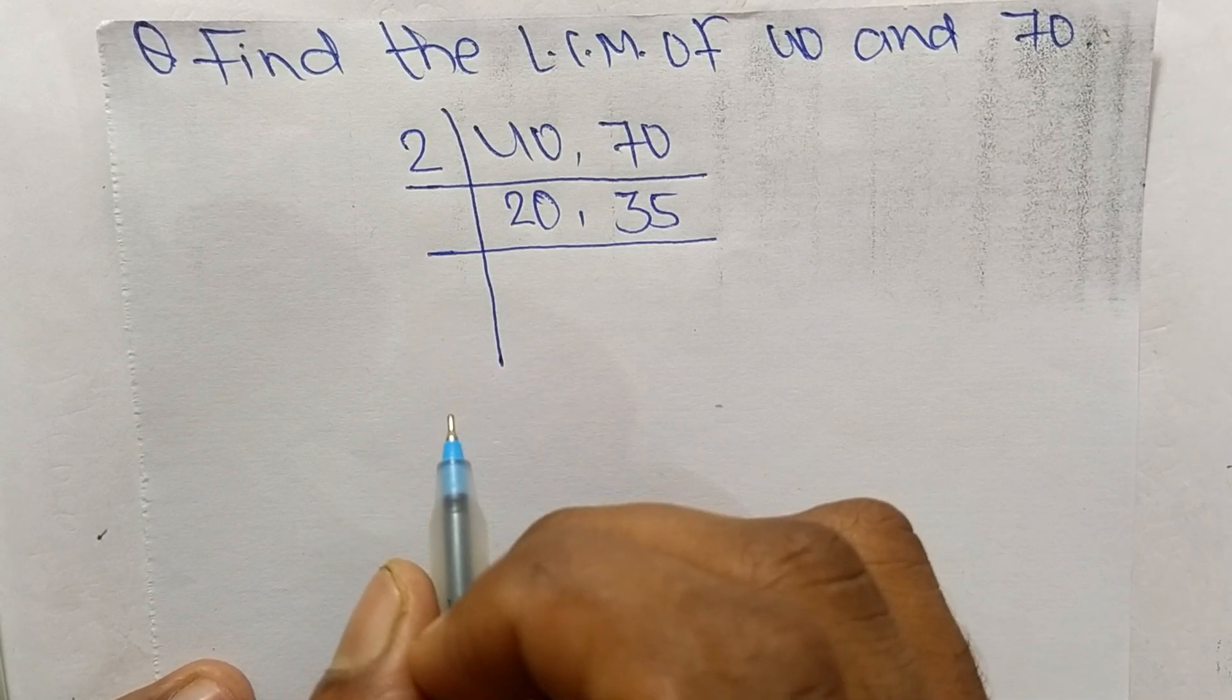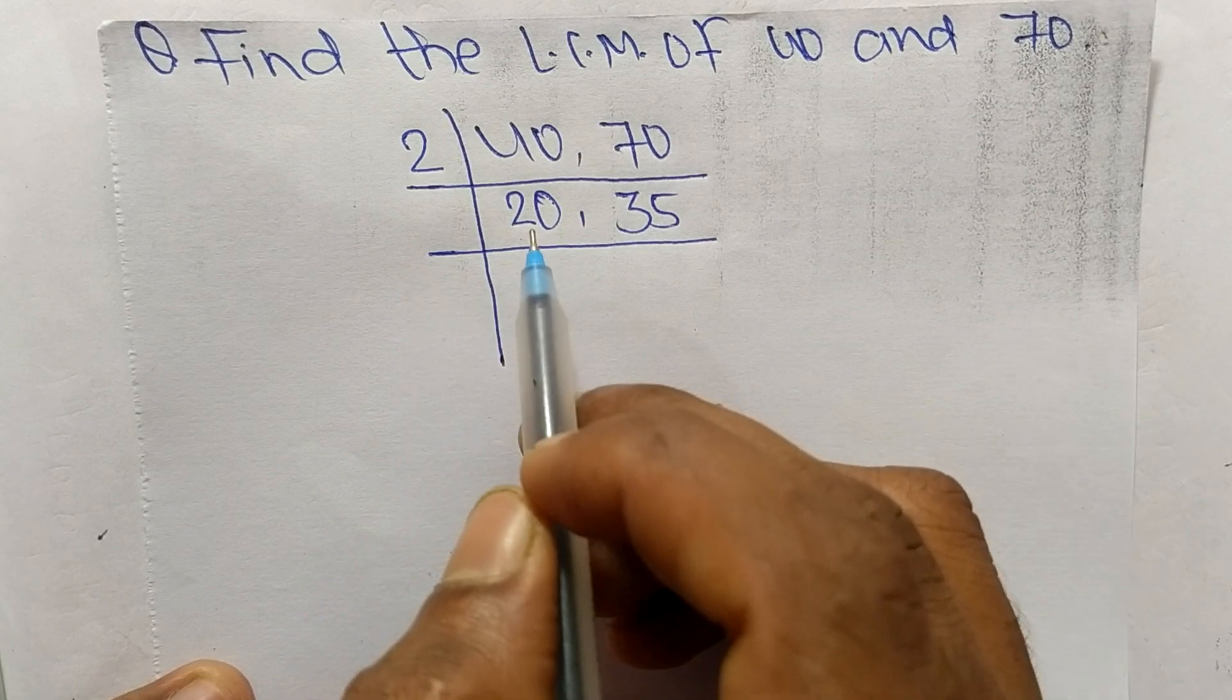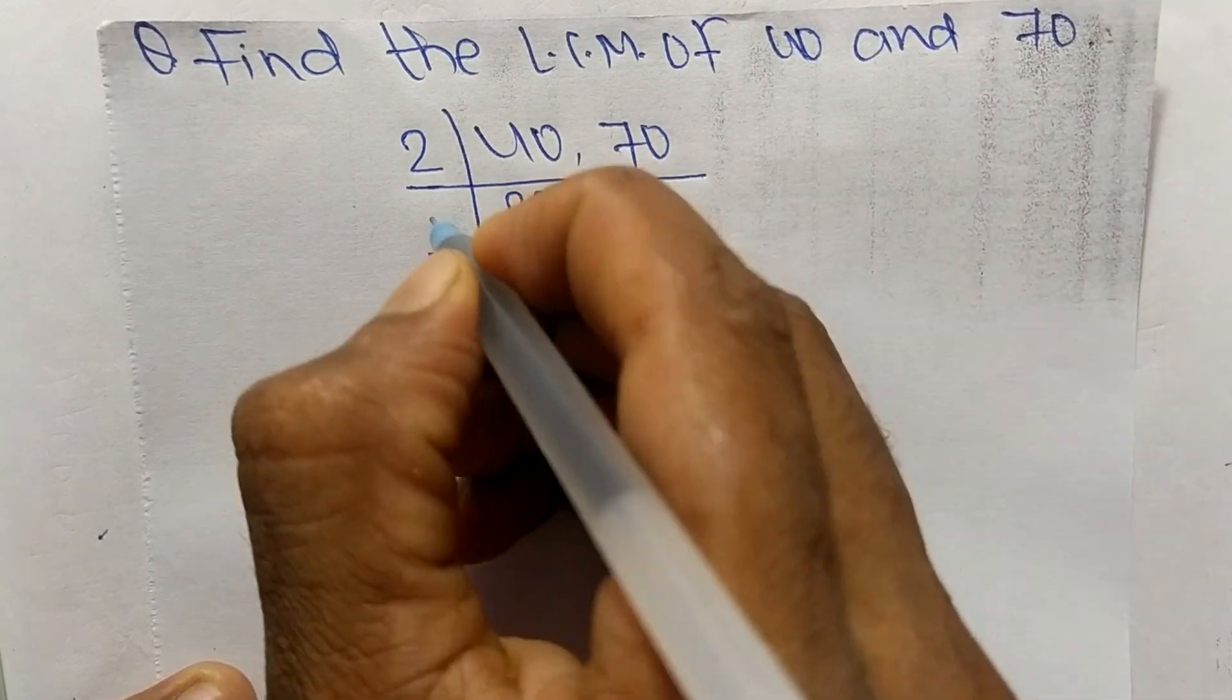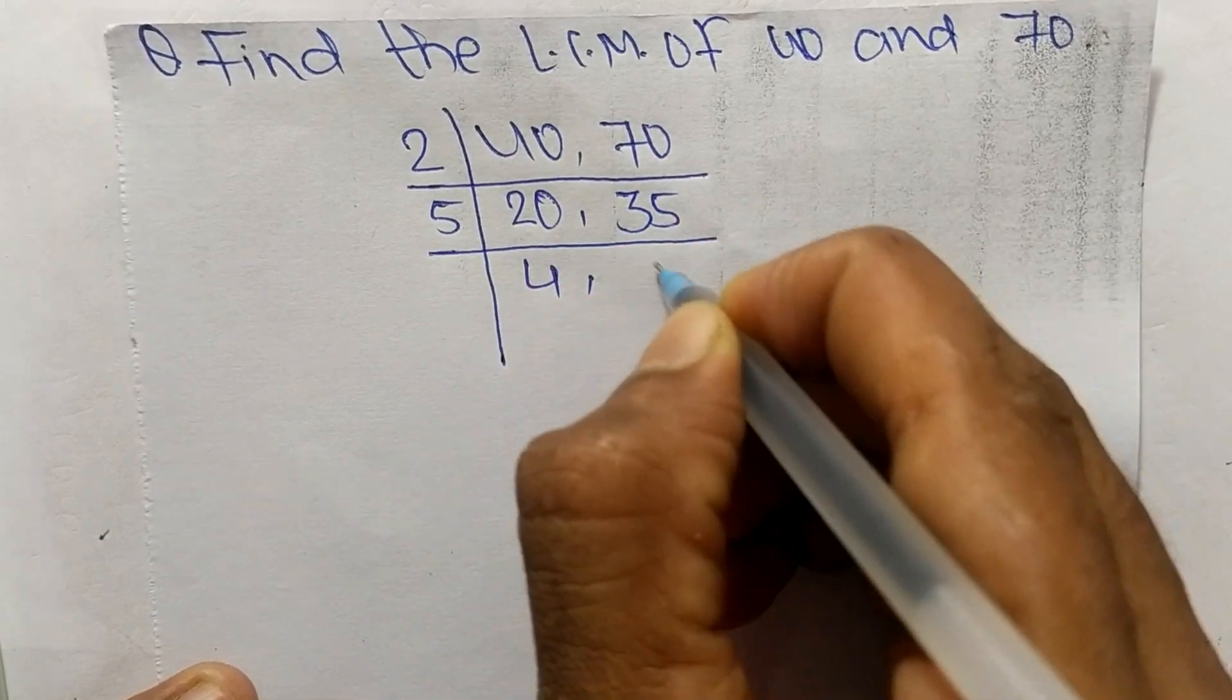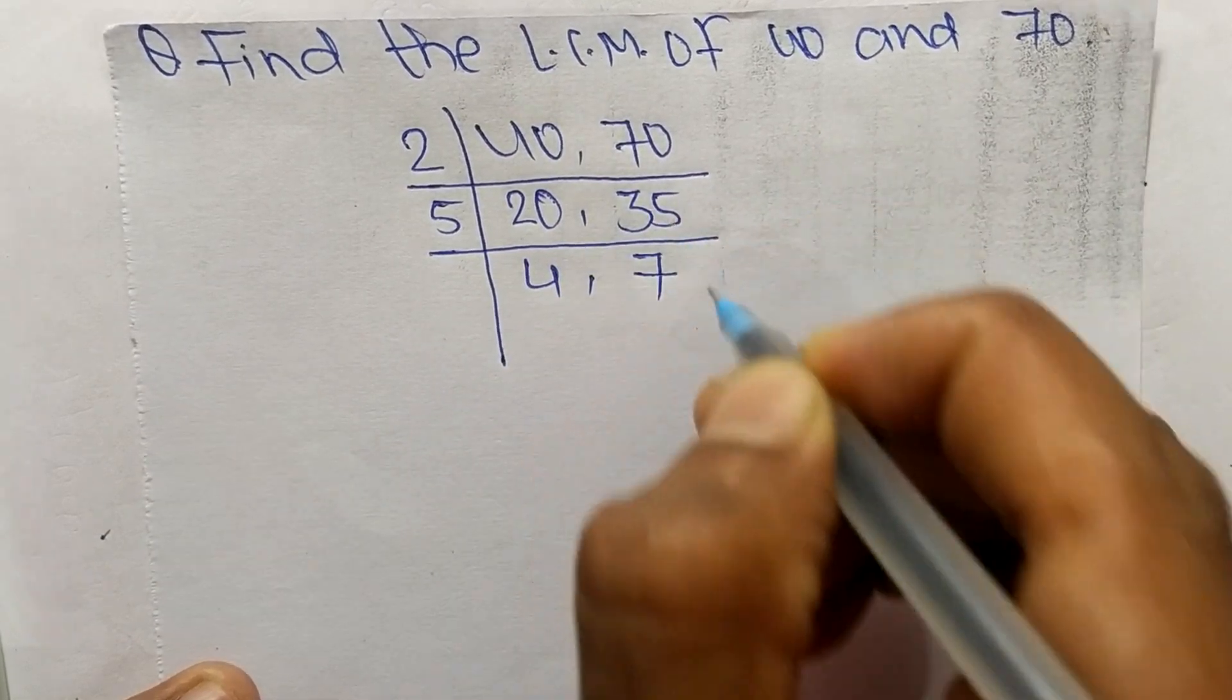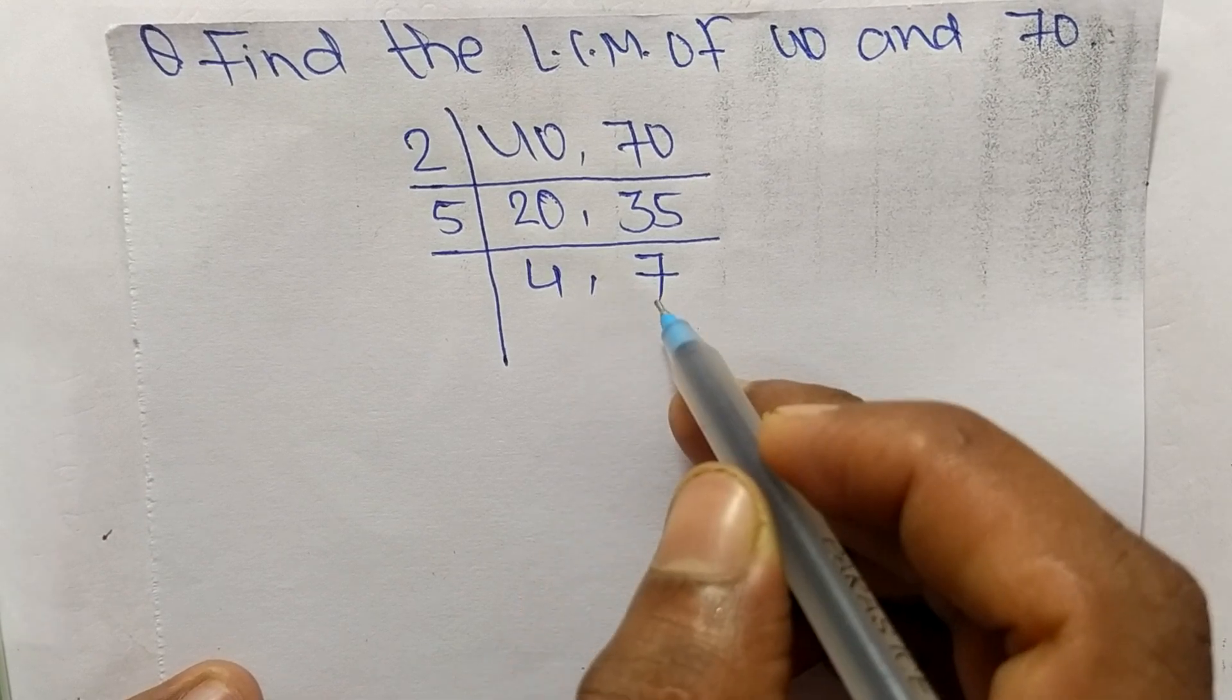So we choose the number greater than 2 that can exactly divide 20 and 35. So the number is 5. 5 times 4 equals 20, 5 times 7 equals 35. So at last we have 4 and 7.